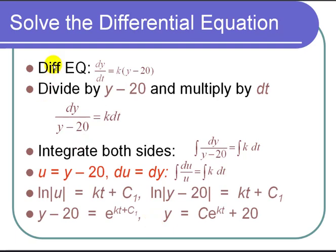So now let's solve this differential equation, dy/dt equals k times y minus 20. First divide by y minus 20 and multiply by dt on both sides. And we get dy over y minus 20 equals k times dt.